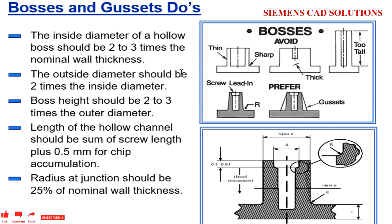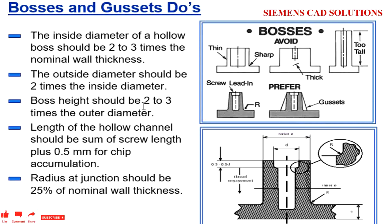We need to avoid designs with thin and sharp edges on the boss area. Thick material accumulation should also be avoided, and too-tall bosses should be avoided. If you have a screw mounting on this area, you need to have a profile to hold the screw head so that your feature will have more strength and will sit properly. We need to have gussets — this is the preferred design. Boss height should be 2 to 3 times the outer diameter.